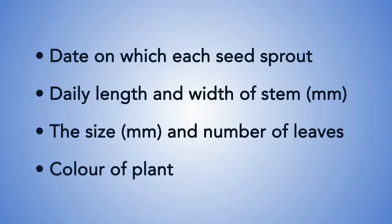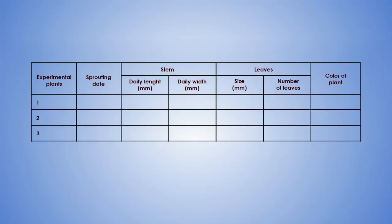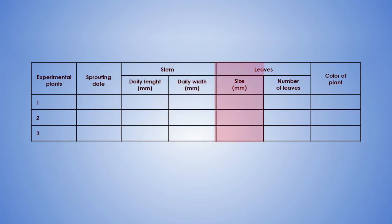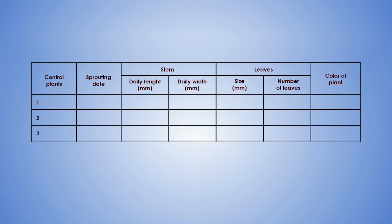Record the color of plants, then put the above information or data in a table form. The table has several columns: experimental plants, sprouting date, daily length in millimeters, daily width in millimeters, size in millimeters, number of leaves, and color of plants. For the second table, we have the same number of columns, but this contains information on the controlled plants, while the first one has information on the experimental plants.